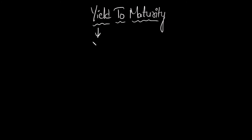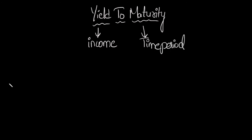Now let's move to yield to maturity. In the term itself, 'yield' is the income we expect to get when we invest. What is 'maturity'? It is the time period of the bond — for example, if the maturity is five years, that is the bond's duration. After five years you get your full returns. So: current yield is what we expect, whereas yield to maturity is exactly what we get over a specific time period until maturity.